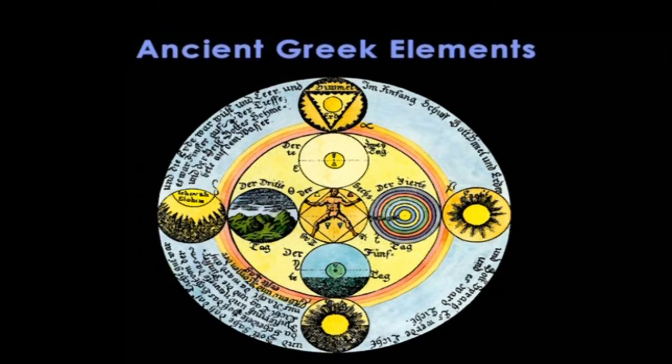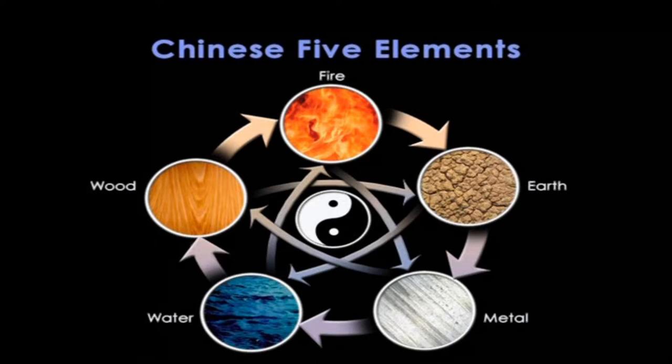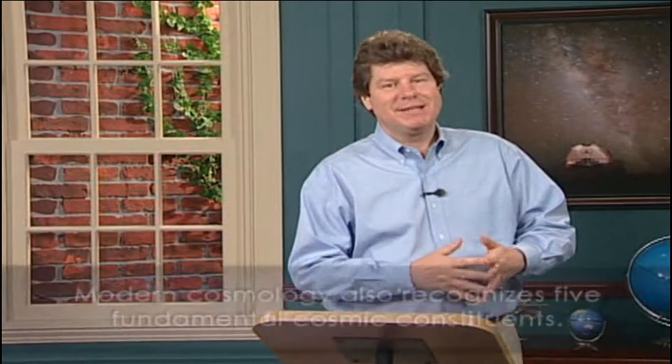As with many cosmological questions, this one also has a long heritage. The ancient Greeks referred to five elements: earth, water, air, fire, and the celestial element ether. The Chinese also referred to five elements — fire, earth, metal, water, and wood — which were related to deeper, more spiritual attributes of yin and yang. Now, it may come as an amusing surprise to learn that modern cosmology also recognizes five fundamental cosmic constituents.